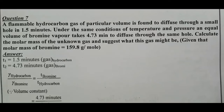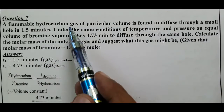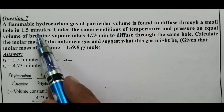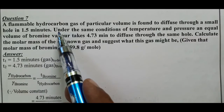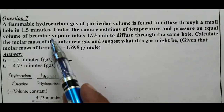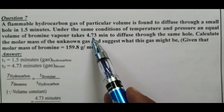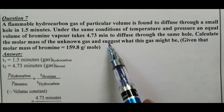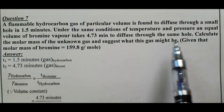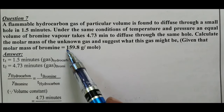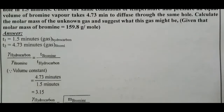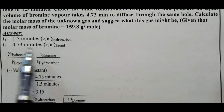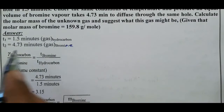Question number 7 (Graham's law): A flammable hydrocarbon gas of a particular volume diffuses through a small hole in 1.5 minutes. Under the same conditions of temperature and pressure, an equal volume of bromine vapour takes 4.73 minutes to diffuse through the same hole. Calculate the molar mass of the unknown gas. Molar mass of bromine = 159.8 g/mol.